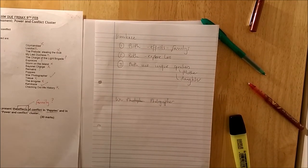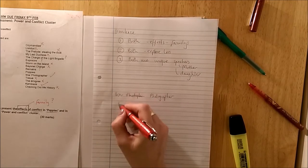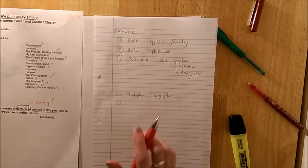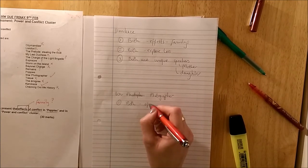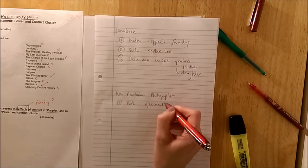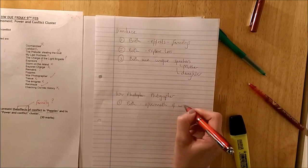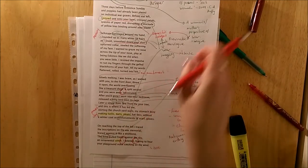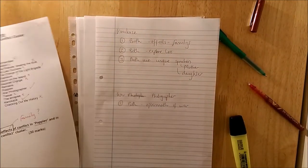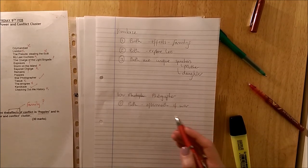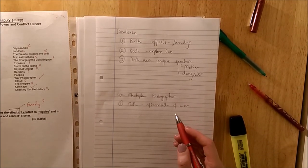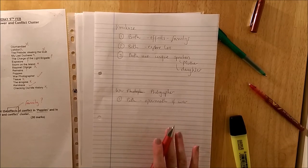If you'd rather do War Photographer, you prefer to choose that poem, then again your plan's going to be quite similar. My first paragraph would be about both explore the aftermath of war. So for Poppies, that's towards the end of her poem. How she feels after the war's over. The War Photographer is all the way through. Coming home. In that red room developing the photographs. And how they feel after the war.